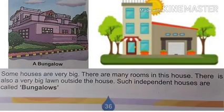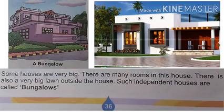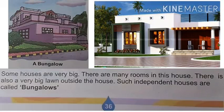You know pakka houses are made up of cement, bricks, stones, steel, and iron. But there are so many different types of pakka houses. We will see them one by one. Number one: Bungalow. Some houses are very big, there are many rooms, and there is also a very big lawn outside. Such independent houses are called a bungalow.